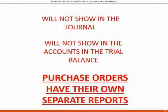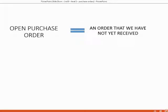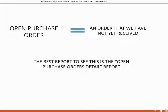Purchase orders have their own separate reports for you to manage what was ordered, what was received, and what you are waiting for. To manage your purchase orders, you must know what an open purchase order means. An open purchase order is a purchase order that we have not yet received, even though we mailed out the document to the vendor. The best report to see this is the Open Purchase Order Detail report.